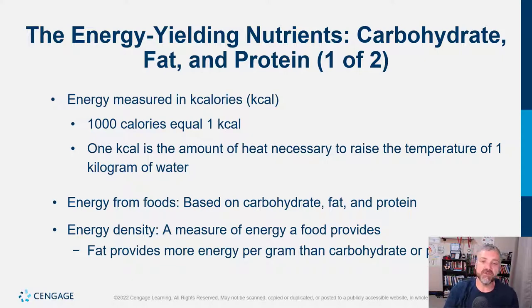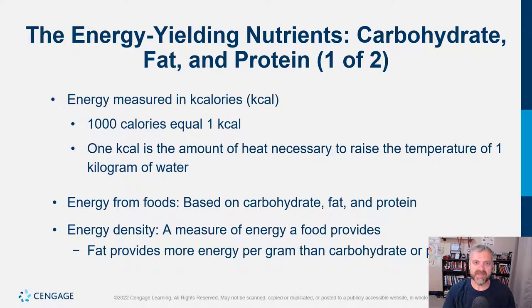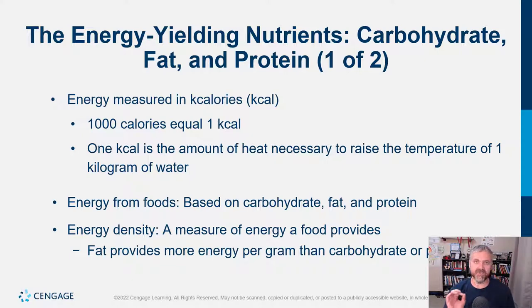Let's start with the energy-yielding nutrients — your macronutrients: carbs, fats, and proteins. Macronutrients just means you need a lot of them — we need grams and grams of them, whereas we need milligrams and micrograms of vitamins and minerals. When I say the word calorie, I'm talking about a Kcal, or kilocalorie — that is a calorie with a capital C. When you look at how many calories are in something you're eating, that actually is a thousand true calories technically, but we just call them calories. Carbs, fat, and protein have different amounts of energy in them.